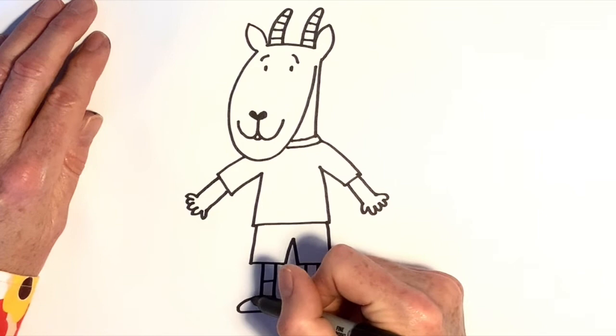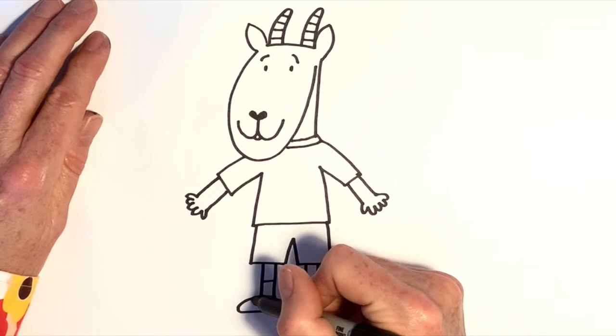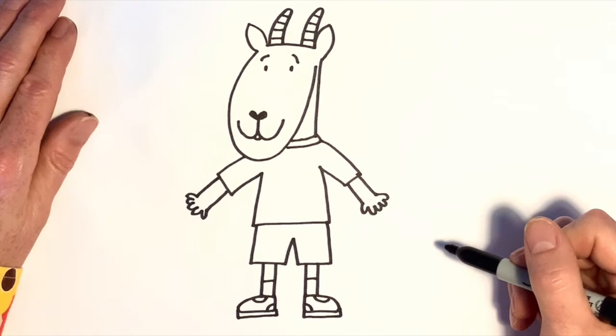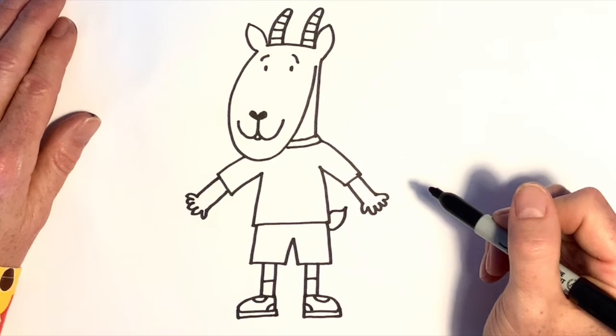Put some shoes on the end of each foot, and some socks. And add a little bit of detail to his shoes. Actually, I think they're trainers, so I'm going to put some soles on the trainers like that. And add a little tail, and a stripe on the t-shirt.